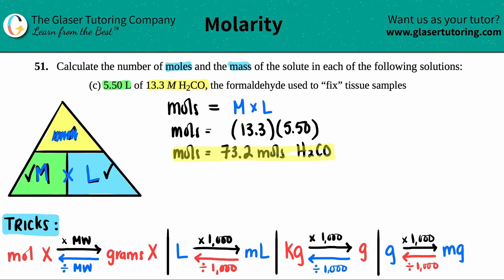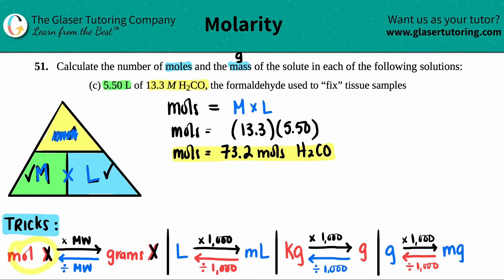Now we have to convert the moles into a mass — and the mass is just grams. How do we go from moles of formaldehyde to grams of formaldehyde? Here's a little trick if you don't want to do dimensional analysis: if you're starting with moles of something and want grams, all you have to do is take that mole value and multiply it by the molecular weight, or molar mass — they're the same thing. That number comes from the periodic table, and everything comes back in chemistry.